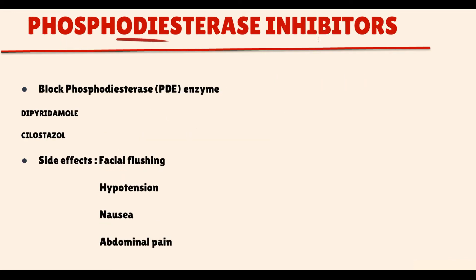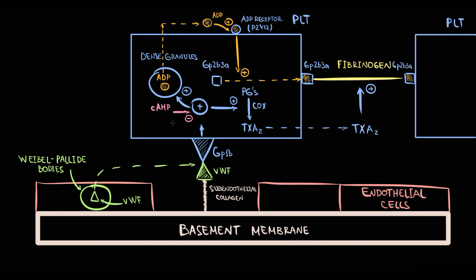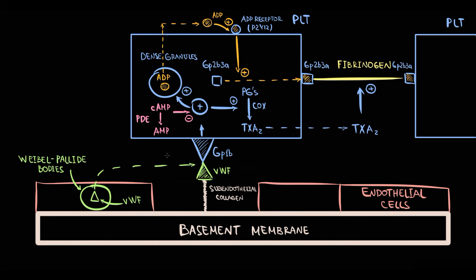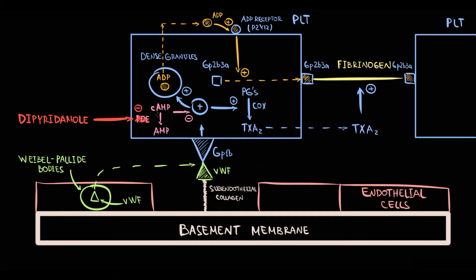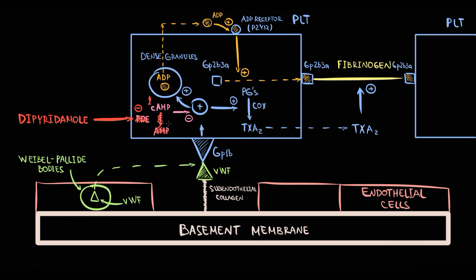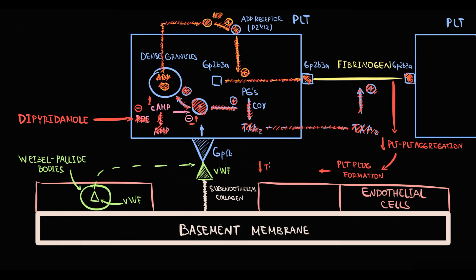The next class of drugs is called phosphodiesterase inhibitors. The most popular drug here is dipyridamole. What we have to know is that cyclic AMP significantly inhibits platelet function. There are enzymes that regulate the amount of cyclic AMP inside the cell called phosphodiesterase. Phosphodiesterase degrades cyclic AMP into AMP. So when we prescribe dipyridamole, this drug inhibits phosphodiesterase, thereby degradation of cyclic AMP into AMP decreases, the level of cyclic AMP inside the platelet increases, and the increase in cyclic AMP markedly inhibits platelet function. So expression of GP2B3A receptor will decrease, and as a result aggregation will decrease, platelet plaque formation will occur slower, and this decreases the risk of thrombotic events.